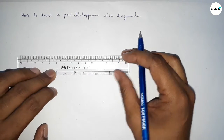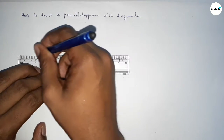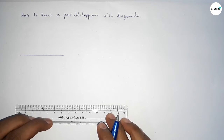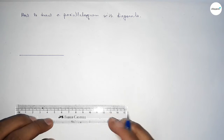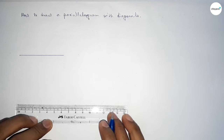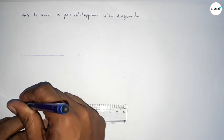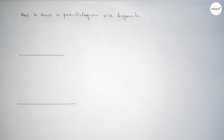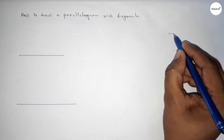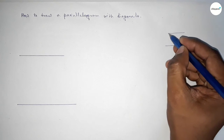First of all we have to draw the two diagonals. Taking a line of length 6 centimeters and taking another line of length 8 centimeters as the two diagonals of the parallelogram. You can take any length.